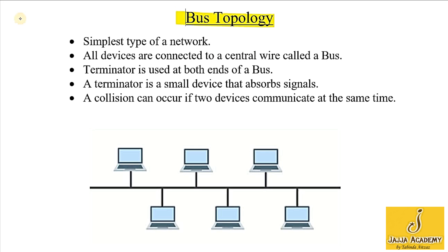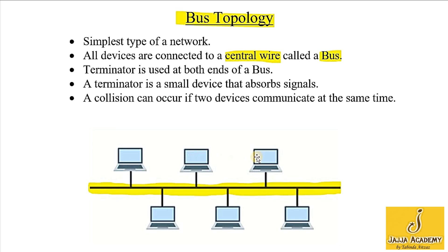Bus topology is the simplest type of a network — simplest type means simplest arrangement. All devices are connected to a central wire, which is also called a bus. In this diagram, you can see all devices or computers are connected to this central wire.